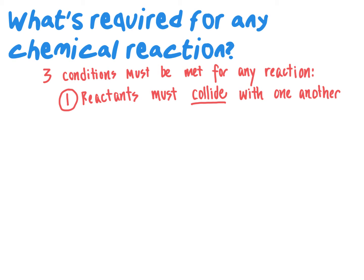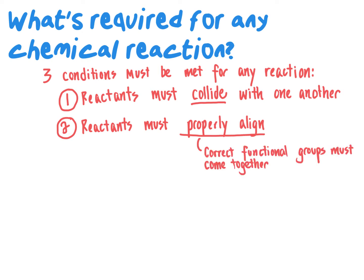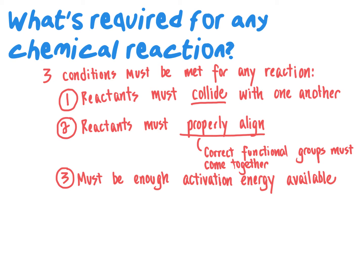Within the body, for example, if two molecules are coming together — such as monosaccharides being linked to form polysaccharides — those monosaccharides have to collide in order to possibly react. But collision by itself is not enough. Condition number two is that the reactants have to align properly. The correct functional groups have to come together in close proximity so that the necessary bonds can be broken and formed, and this can be a very slow process in the absence of a catalyst.